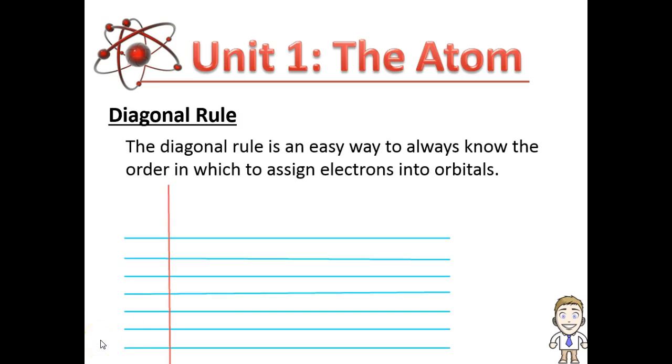For this we have a special rule known as the diagonal rule. It's just an easy way, almost like a memory device, to always know the order in which to assign electrons into orbitals.